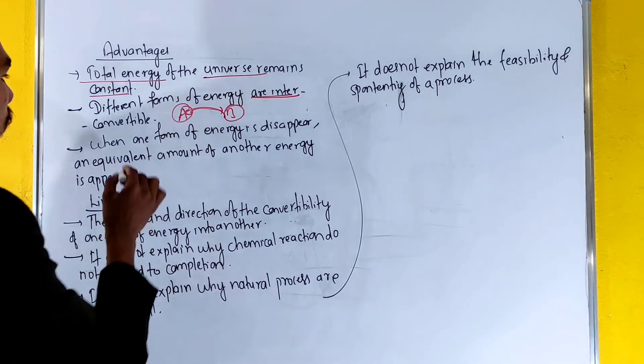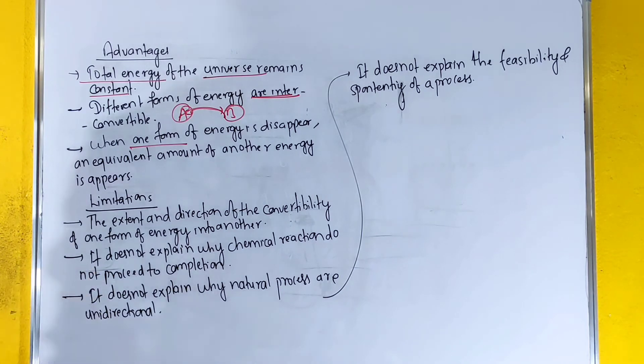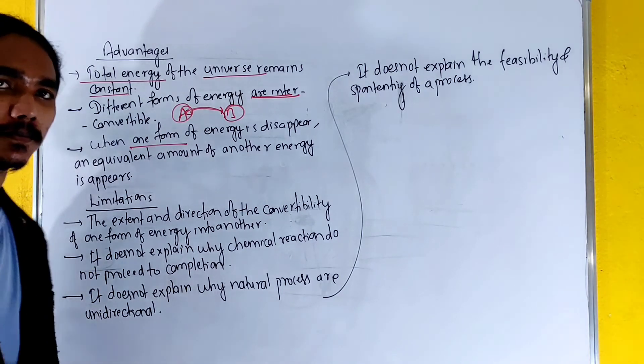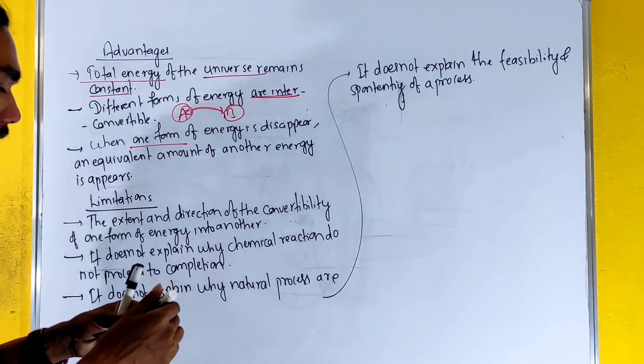When one form of energy disappears, an equivalent amount of another form of energy appears.